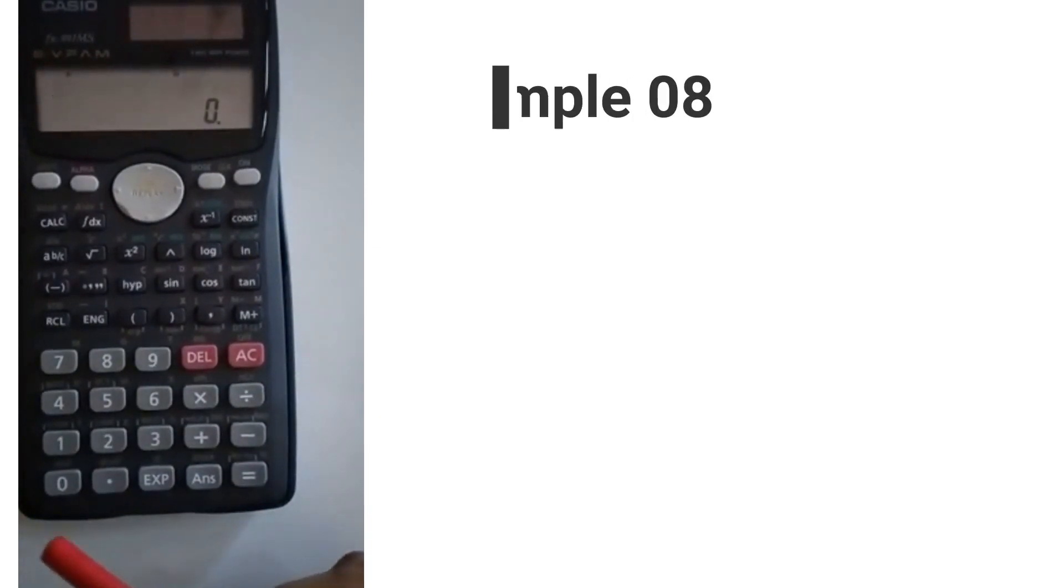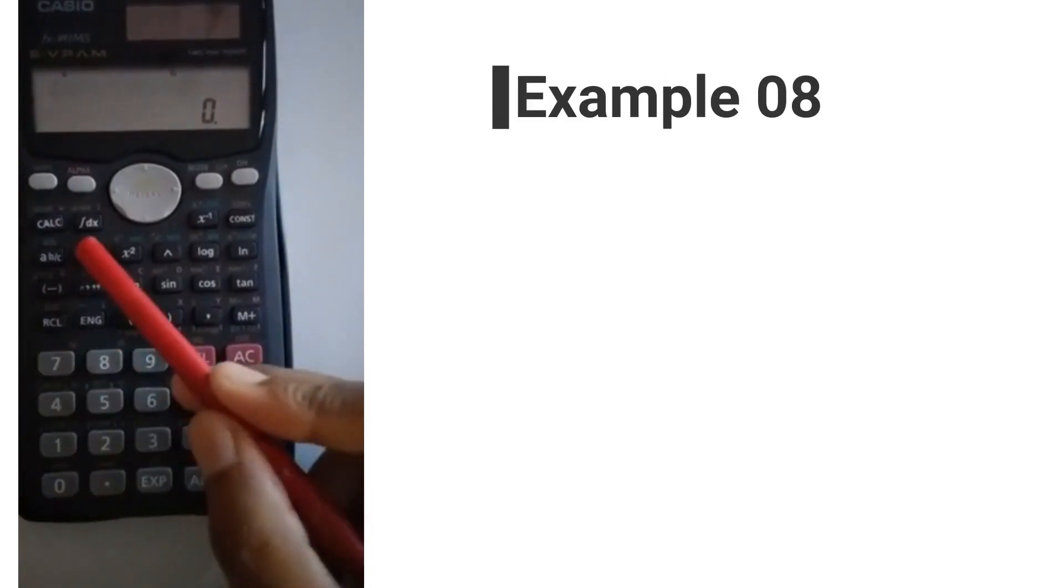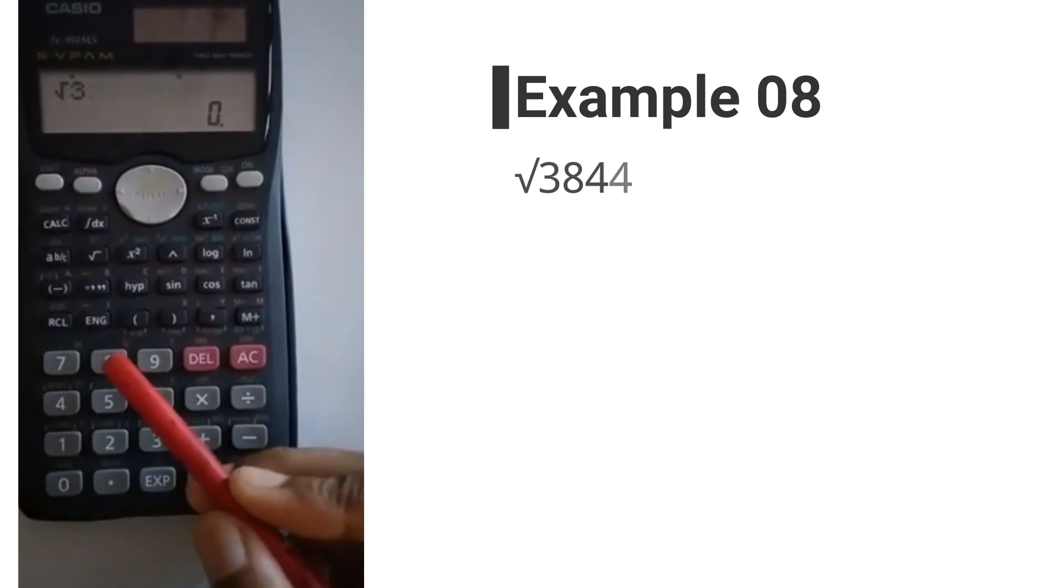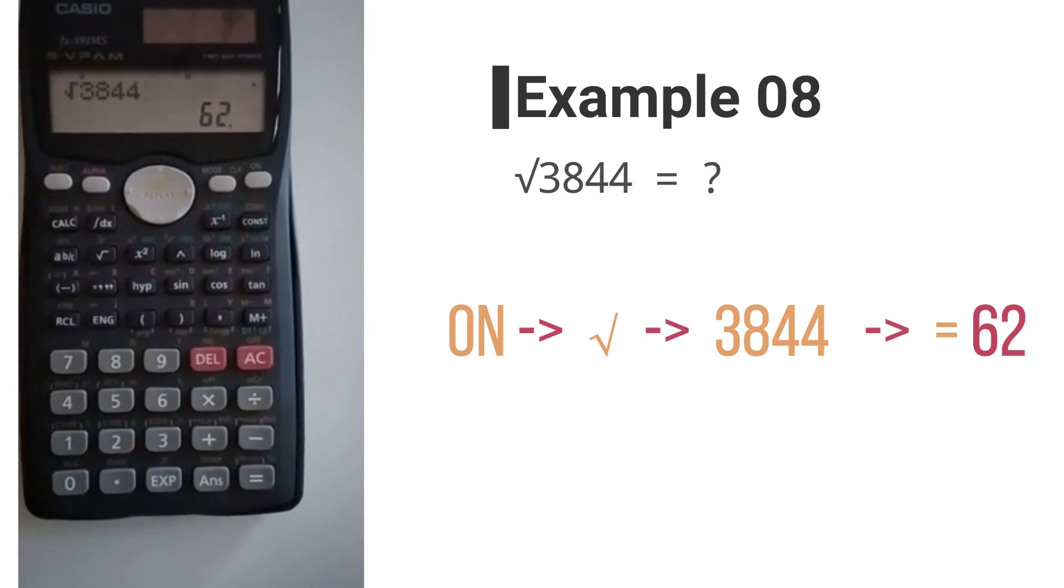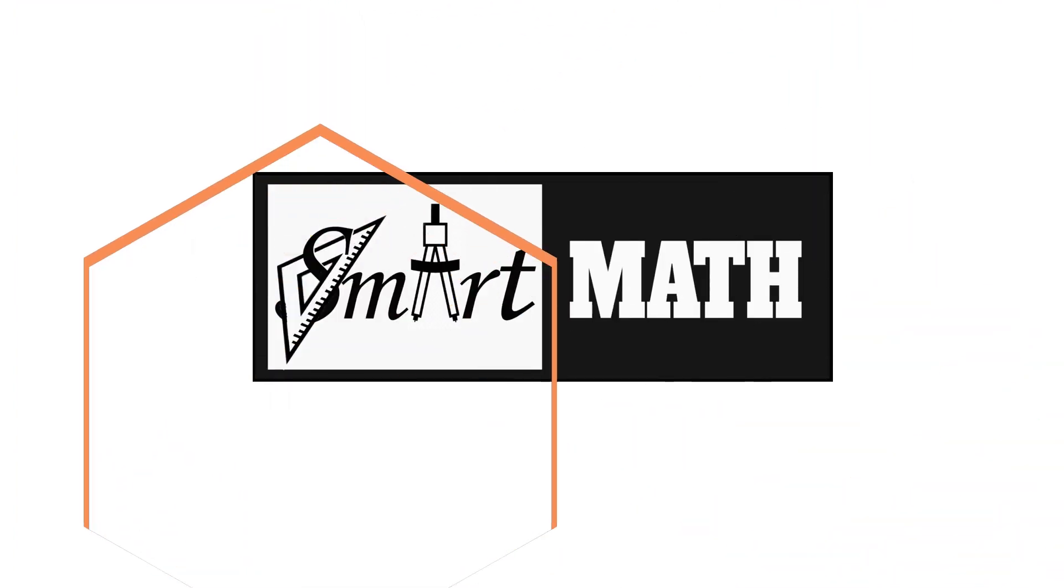Moving on to the last example: square root of 3844 is 62. Hope I made myself clear with the scientific calculator. See you with another Smart Math clip. Until then, goodbye.